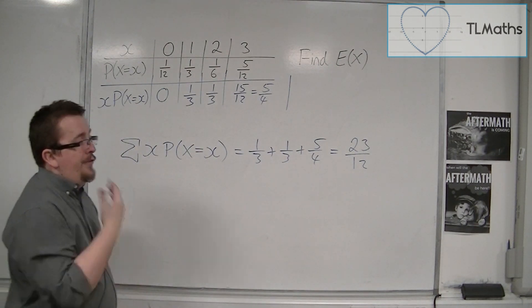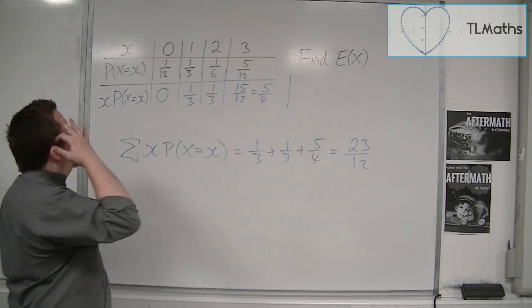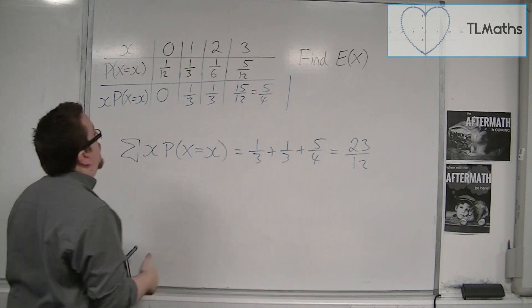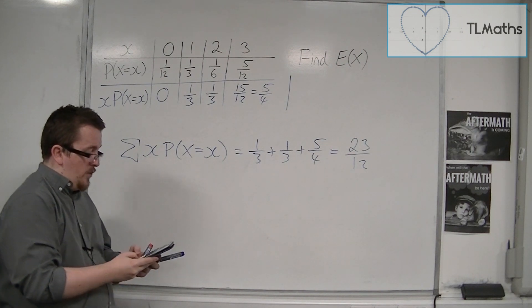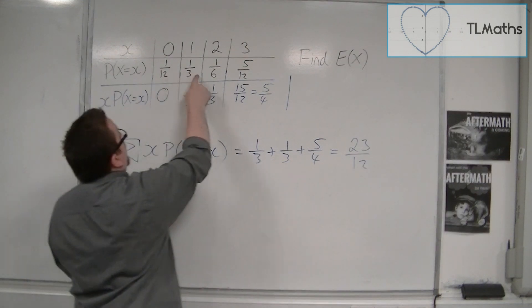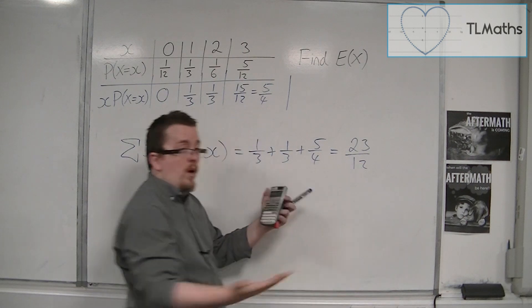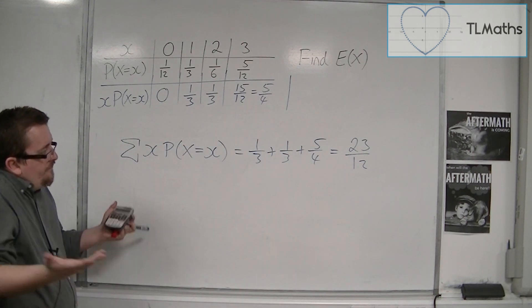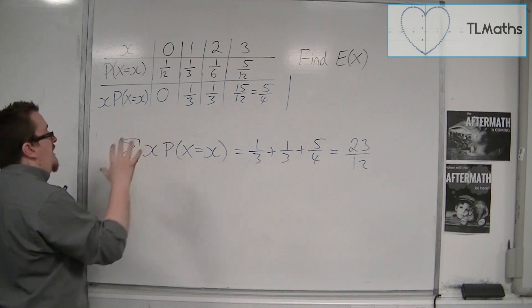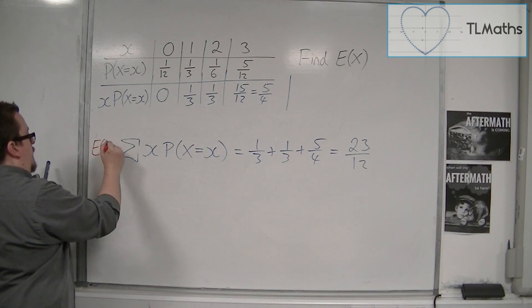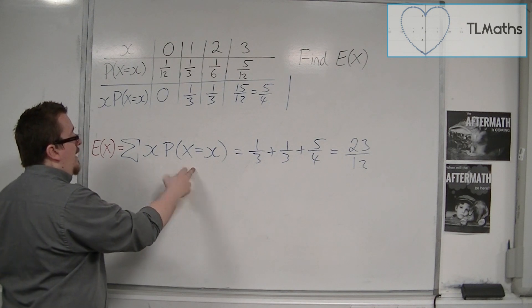You would then divide by how many there were, the total frequency. So you would divide by the total of each of your frequencies. But of course, 1/12 plus 1/3 plus 1/6 plus 5/12 is just equal to 1. These probabilities will add up to 1. And so if I'm dividing by the total frequency, I'm just dividing this number by 1. So effectively it doesn't change it. So in other words, the expected value of x, E(x), is just multiplying the x's by their probabilities and then adding them all up.